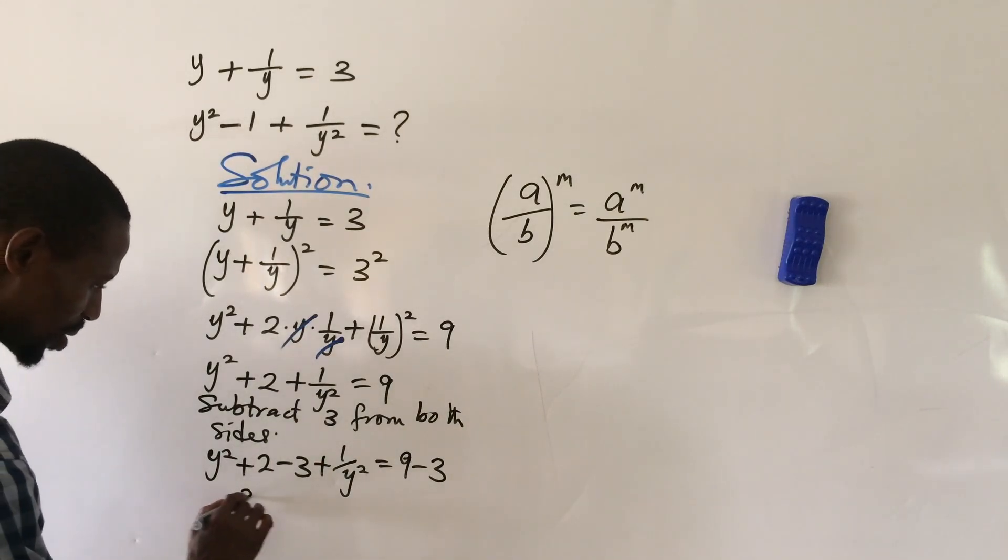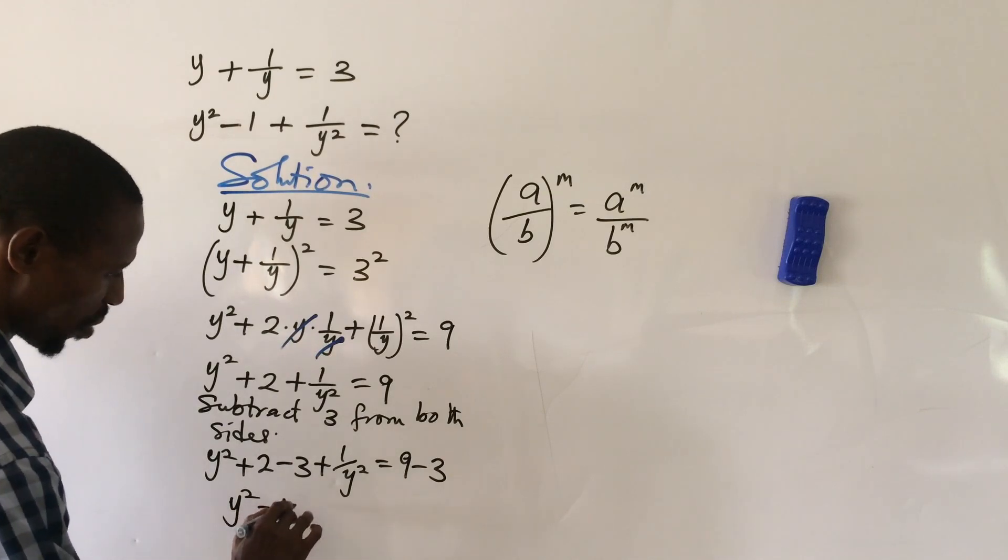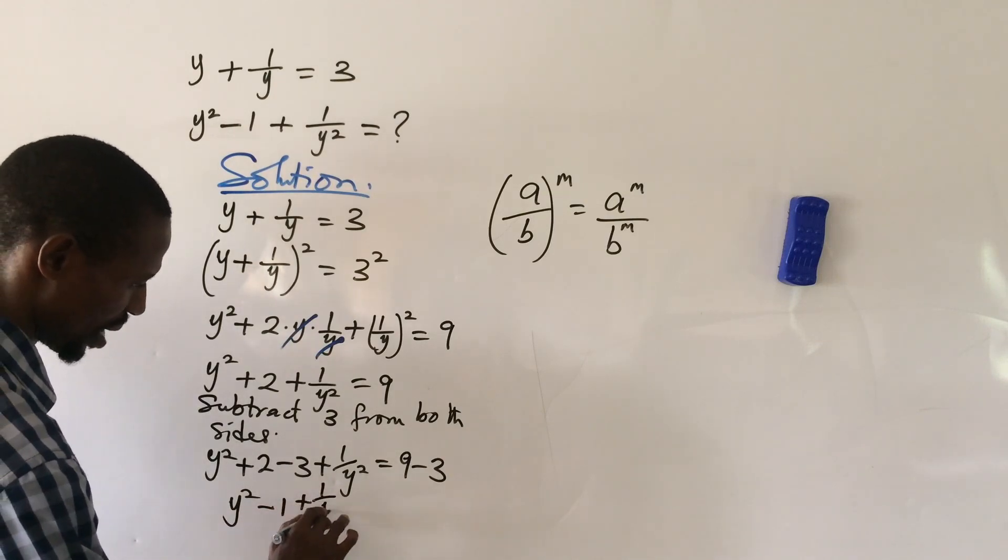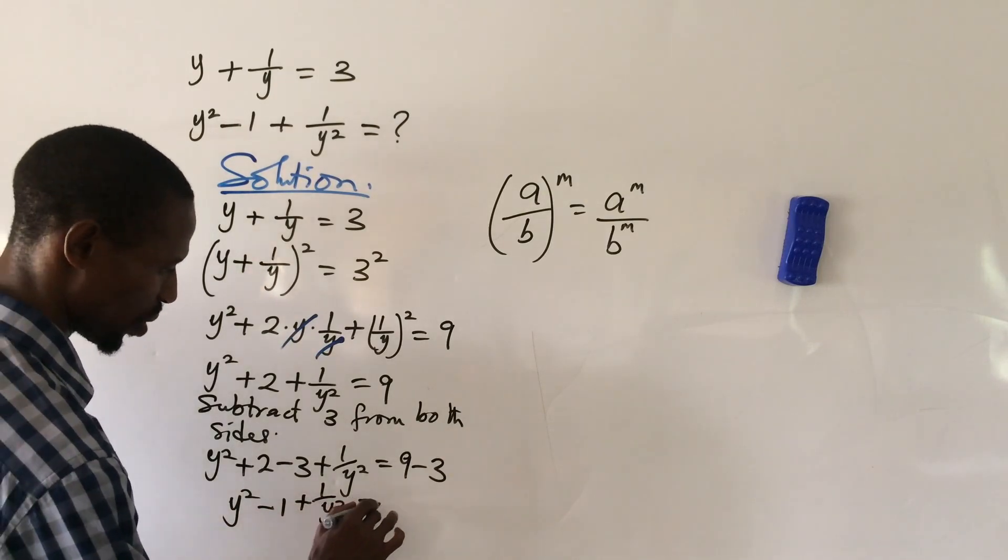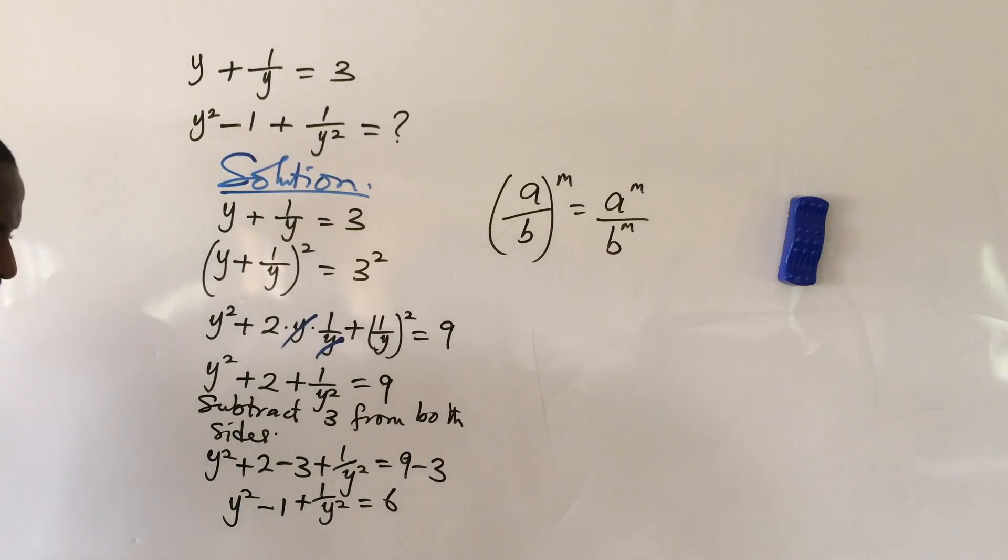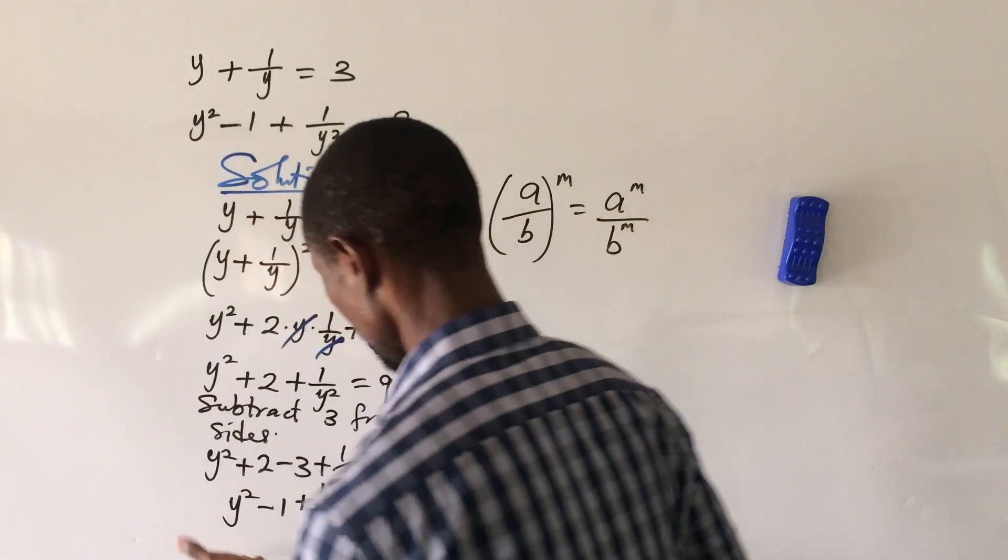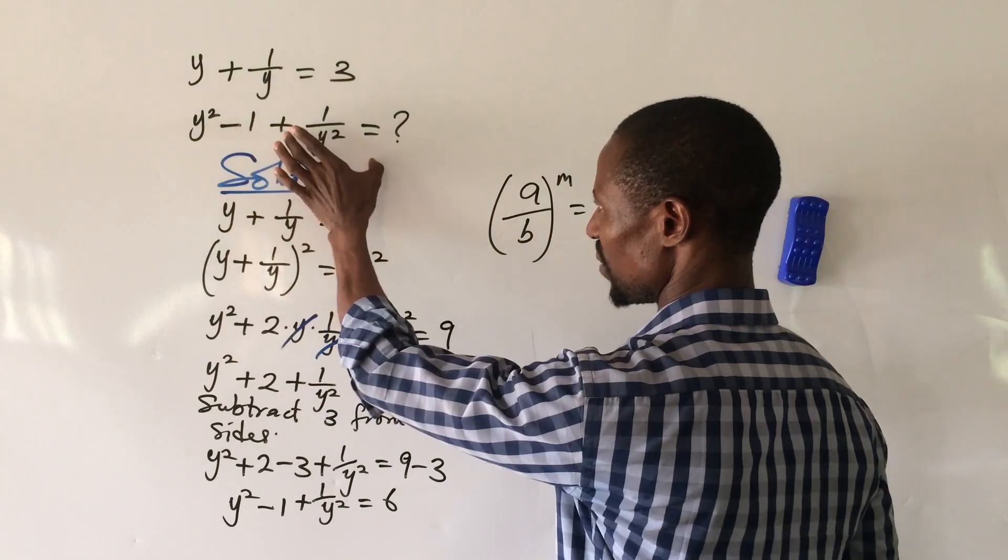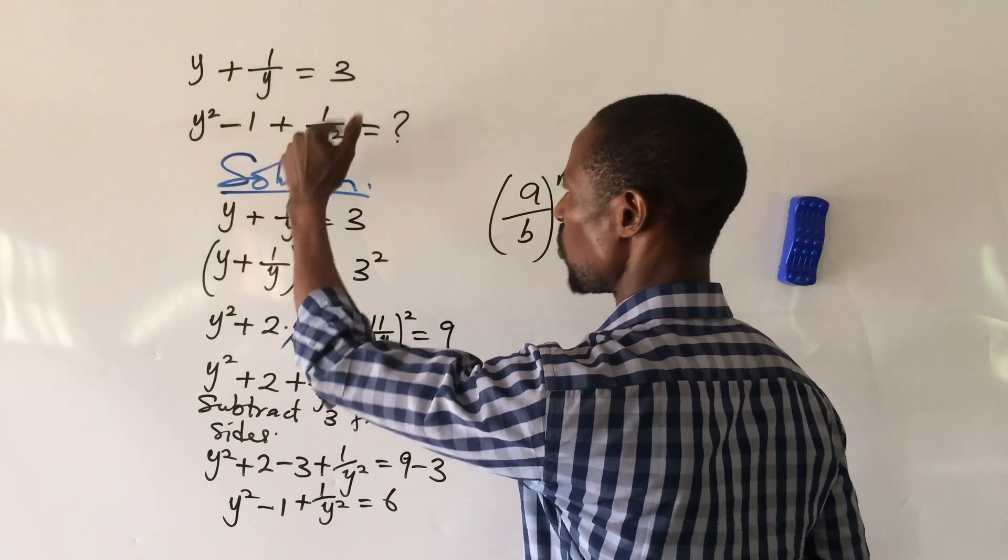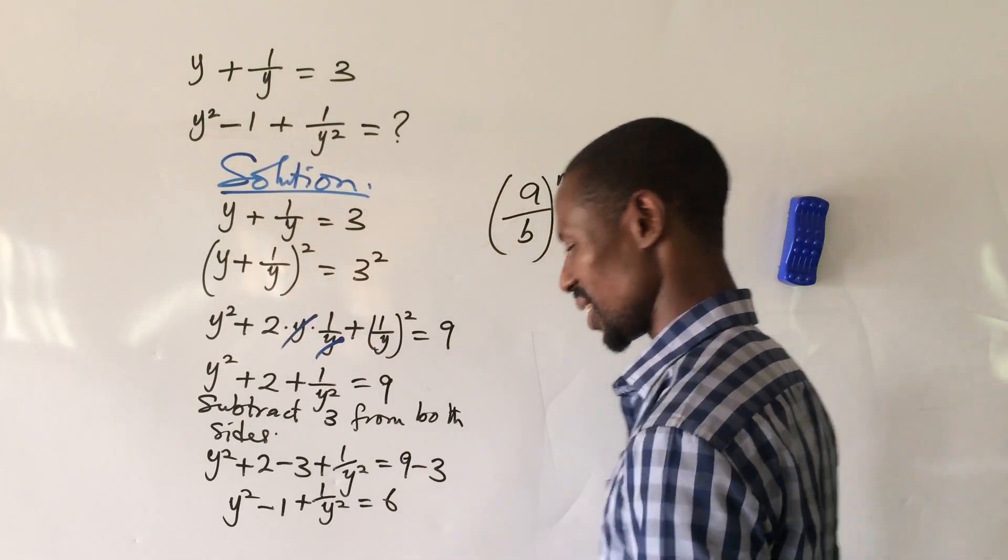Now if you look at this expression, it's exactly what we have here. What is the value? It's 6. So this is our answer to this simple challenge, as simple as ABC.